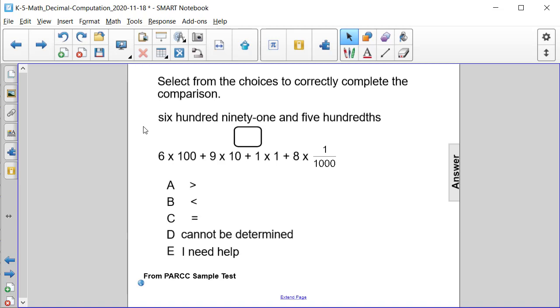Select from the choices to correctly complete the comparison. 691 and 5 hundredths is related how to 6 times 100 plus 9 times 10 plus 1 times 1 plus 8 times 1 thousandth?